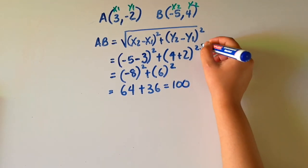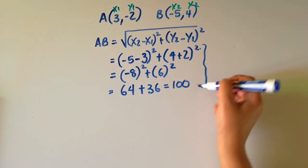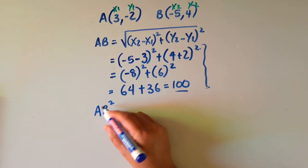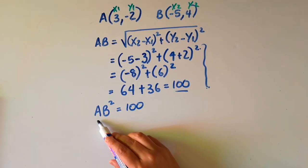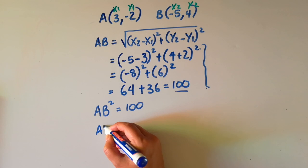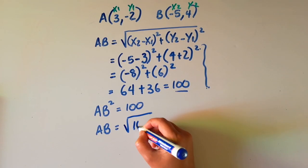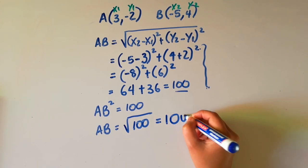Now you'll notice in these steps here I left out the square root. That means what we have calculated, this 100, is AB squared. AB squared is equal to 100, but we don't want AB squared, we want AB. So AB will be equal to the square root of 100, which will give you 10 units.